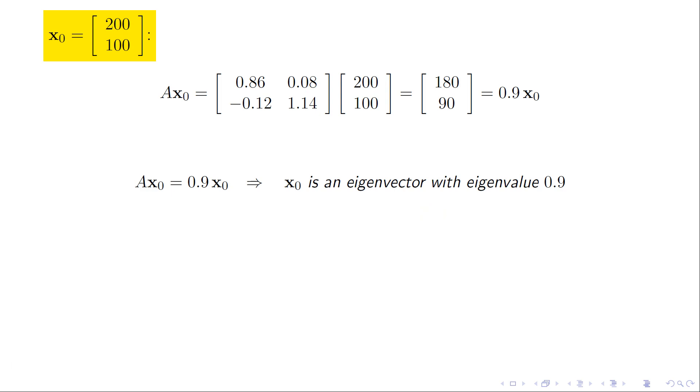And what's kind of important about that eigenvalue, 0.9, is that that is less than 1. So if I repeatedly multiply by A again and again, the 0.9 raised to larger and larger powers there is going to go down to 0. So if I start off with 200 coyotes and 100 rabbits, the general trend over time is that both populations are going to go down to zero. Exponential decay, I guess is what we call that, right?